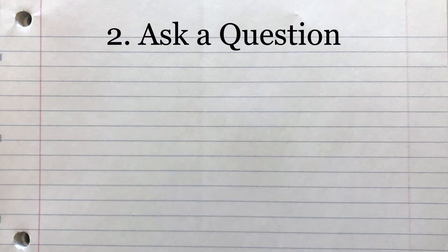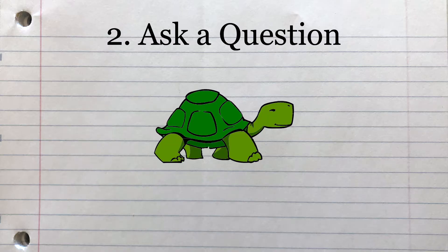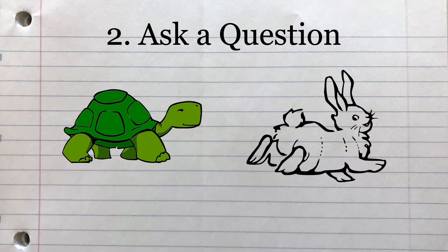This leads us to step two: ask a question. We know this reaction happens very slowly. Can we change the speed of the reaction? What happens if we try to speed it up? Is it even possible to change the speed?